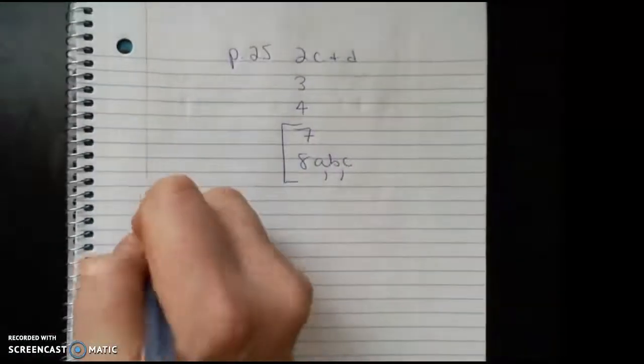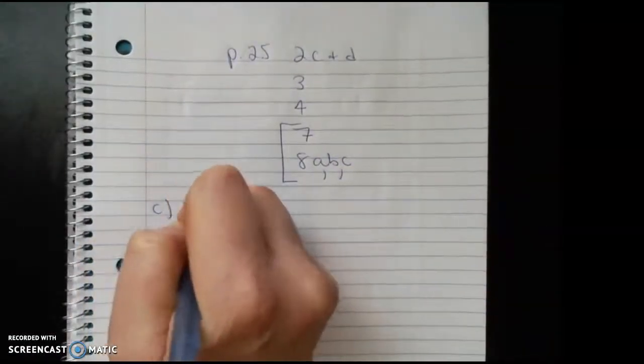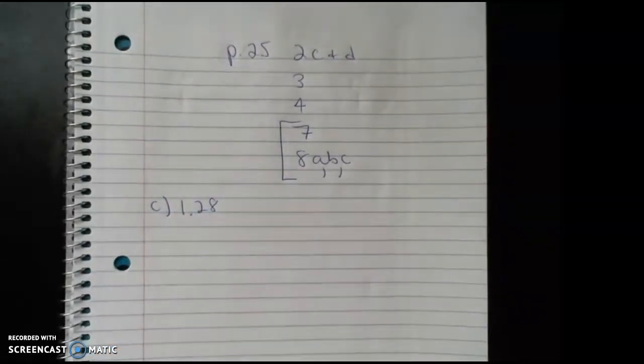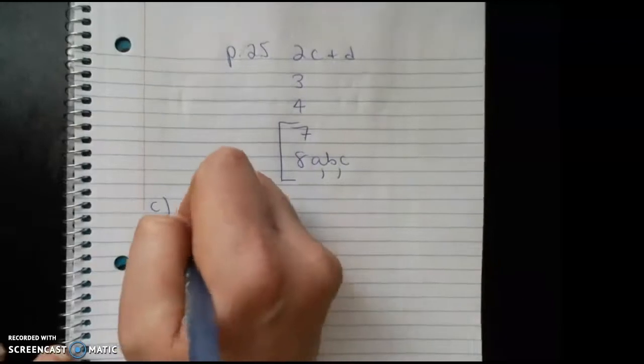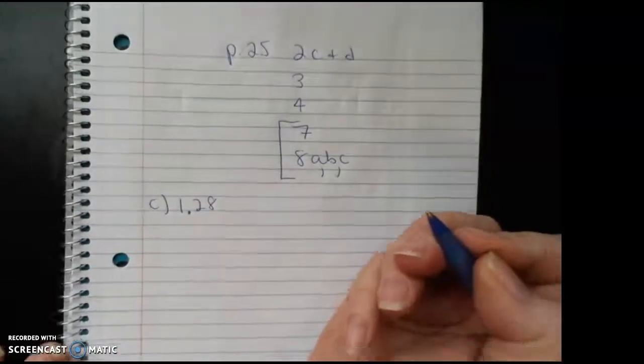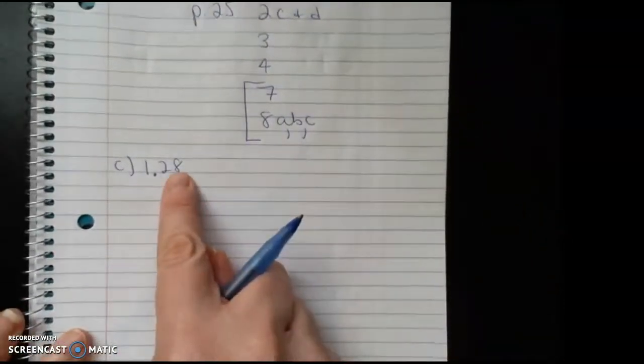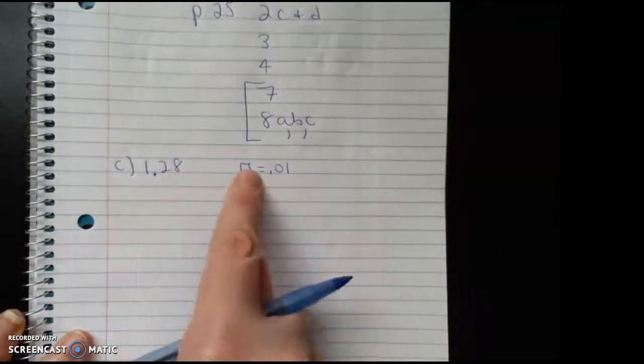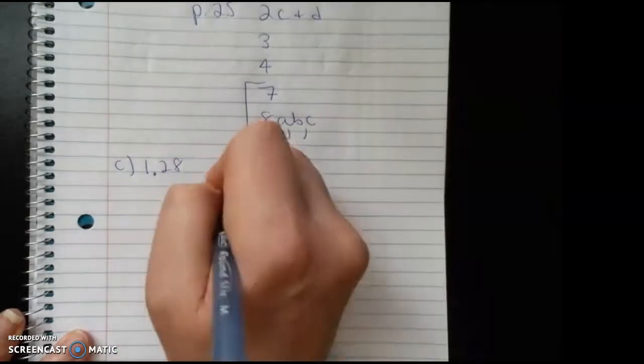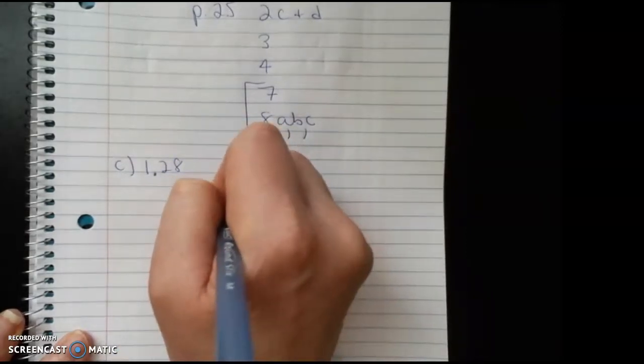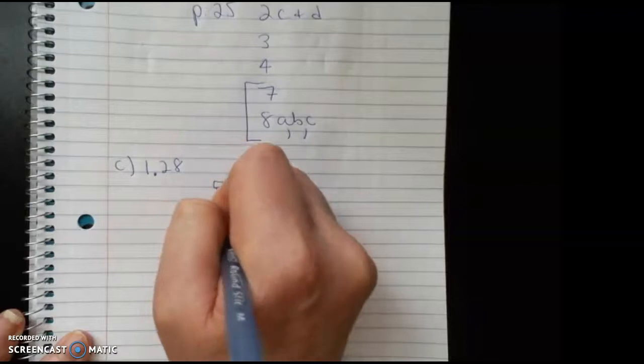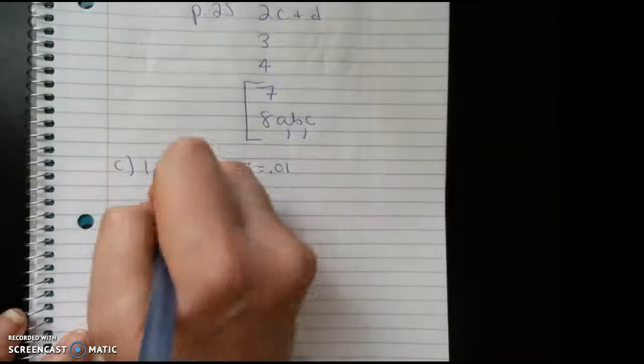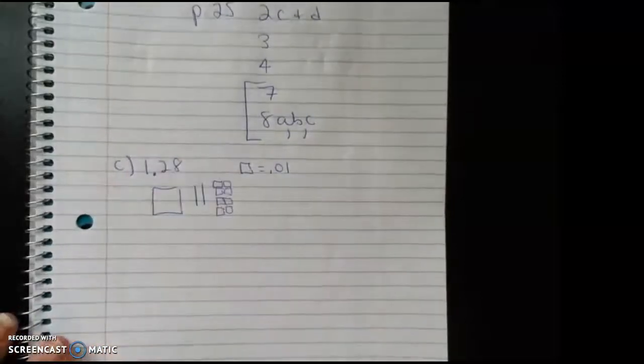So for C, we have here 1.28. All right, and I could do bundled objects, but I could just do base 10 blocks. So I could let my singles be the smallest unit, which in this case would be a hundredth would be my singles. So I would have eight singles.